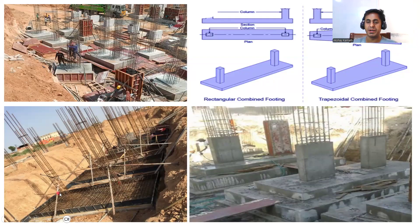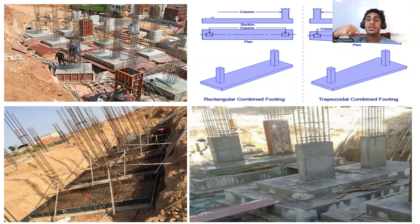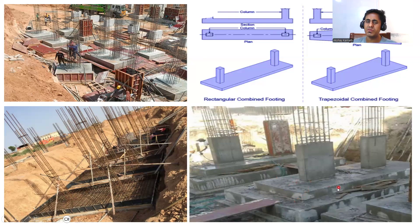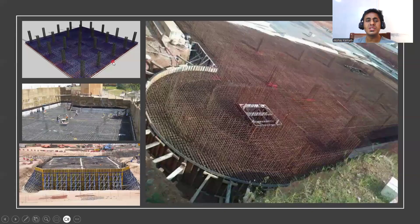A combined footing can have a minimum of two columns — two, three, or four columns may be there. The difference is that in a combined footing you'll have both top reinforcement and bottom reinforcement. In an isolated footing you'll have a top mesh also, but it depends on the condition — for normal residential buildings only bottom reinforcement is sufficient. Sometimes you can also provide a combined footing with steps, but execution becomes difficult; better to go with a single step combined footing.